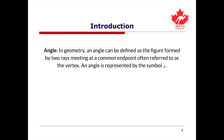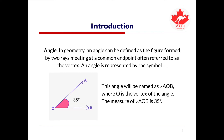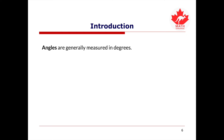In geometry, an angle can be defined as a figure formed by two rays meeting at a common endpoint. An angle can be represented by the symbol on the screen. This angle will be named as angle AOB, where O is the vertex of the angle, and the measurement of this angle is 35 degrees. Angles are measured in degrees.